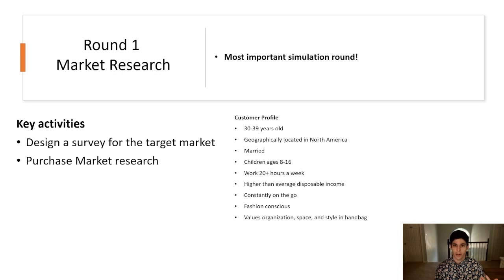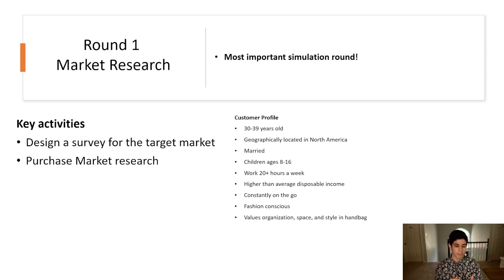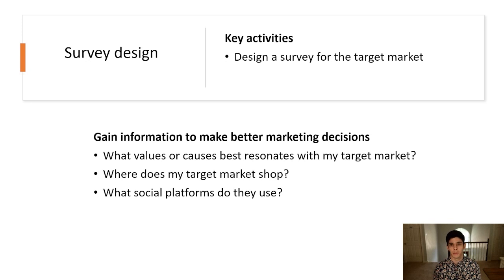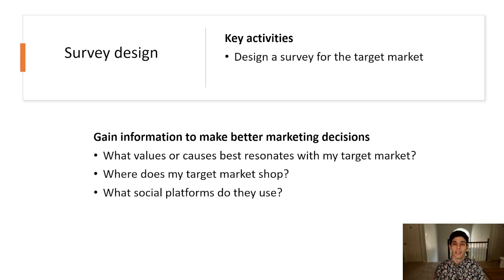In round one you'll be doing two key things: designing a survey for your target market, where you'll select 11 questions to ask and get data from your target market on, and purchasing market research, where you'll be given $5,000 to purchase relevant market research for your new product. To have an effective survey, I recommend focusing on getting the most granular data you can — for example, rather than asking just what platforms customers use, ask how much time they spend on different platforms to better understand how your target market is actually using their time.